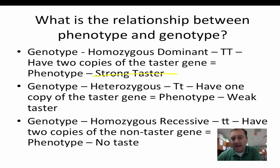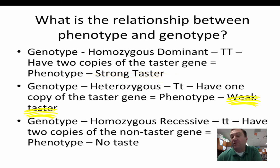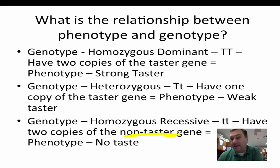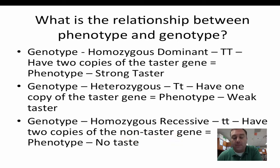If you were homozygous dominant, you were a very strong taster — you tasted it right away and it was unpleasant. If you were heterozygous, you were the model of our carriers: maybe you tasted it a little or it took a while, but nowhere near as strong as the dominant taster. If you were homozygous recessive — the individual modeling the recessive disorder — you couldn't taste it at all. It just tasted like paper.